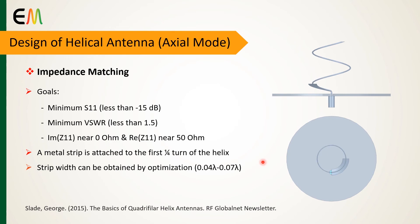The feed point impedance of the helical antenna is too high for the 50 ohm antenna impedance, so one challenging problem in the design of a helical antenna is impedance matching. To achieve impedance matching, in general three items should be satisfied: minimum S11, minimum VSWR, and a pure real input impedance equal to 50 ohms should be verified in the bandwidth range.